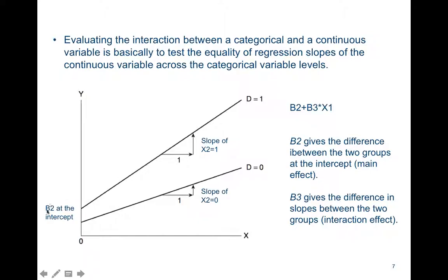So in the main effect, beta 2 will be the difference at the intercept, and in the interaction effect, beta 3 will be the difference between the slopes for X2 equal 0 and X2 equal 1.